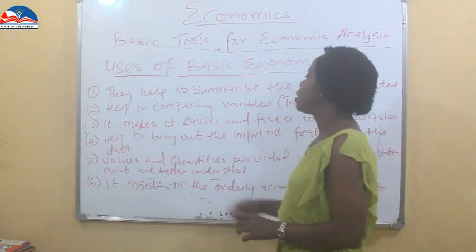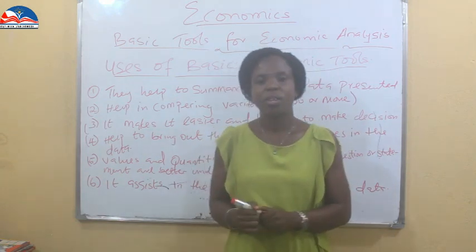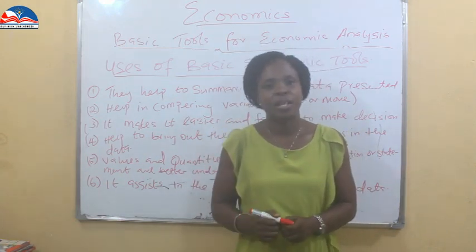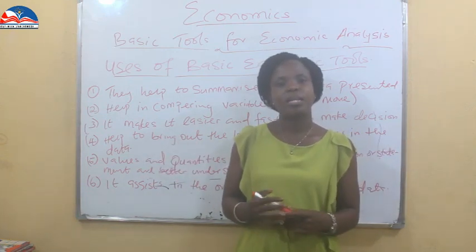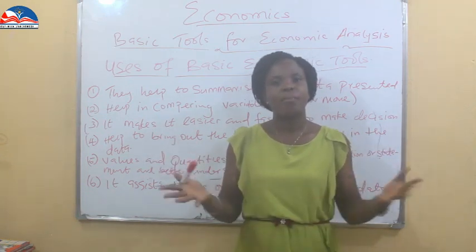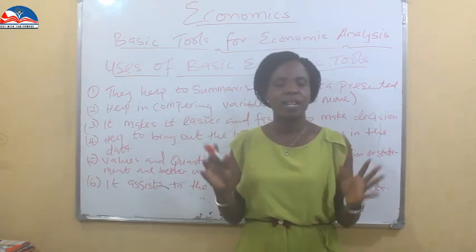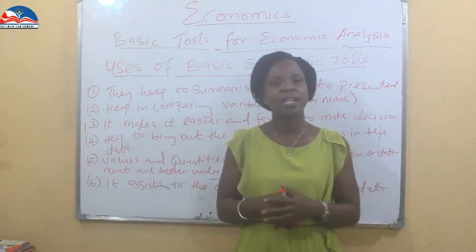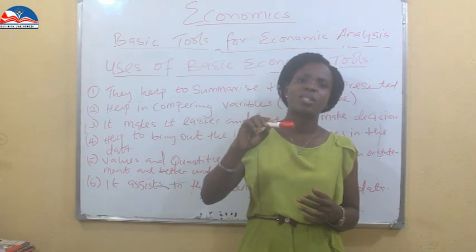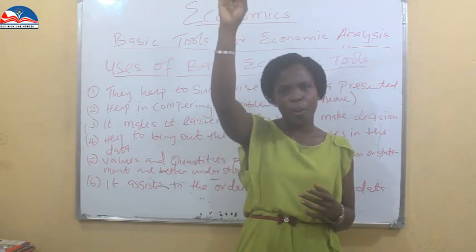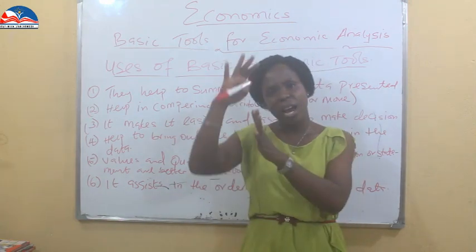The next use is that it makes it easier and faster to make decisions. If Mr. B imported five products and the demand is presented in a pie chart, a table, and a graphical form, you will see the most highly demanded product at the upper peak in the graph, and represented at a higher proportion in the pie chart.